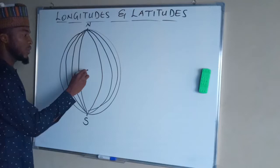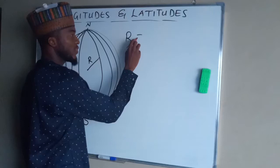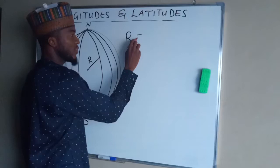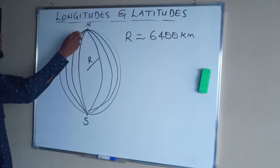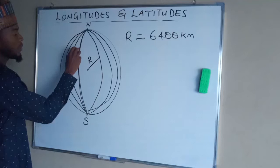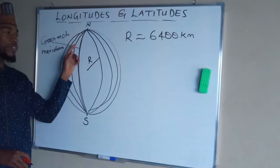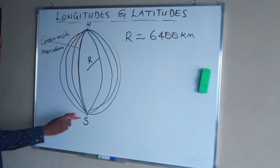So if this is the center, from any point here to any part of the longitudes is called R — which is the radius of the Earth, approximately equal to 6400 kilometers. And among these longitudes, there's one great one which is unique, called the Greenwich Meridian. All other longitudes are measured from this unique longitude.